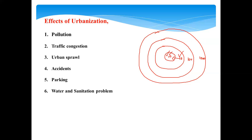More population also means greater need for water and sanitation facilities, which are generally provided inside the city. As the city develops outward, these facilities must be extended from the first circle to the second, third, and beyond. This is a huge problem caused by urbanization. Additionally, population crowding occurs as more and more people come into these expanding areas.